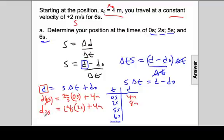The distance after 5 seconds will be the speed, 2 meters per second, times the amount of elapsed time, 5 seconds, plus 4 meters, our starting location. 2 times 5 is 10, plus 4 is 14 meters.